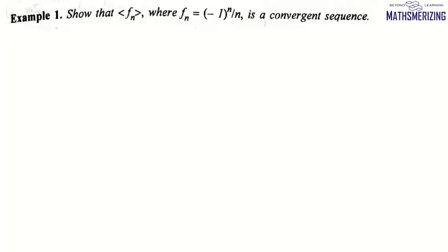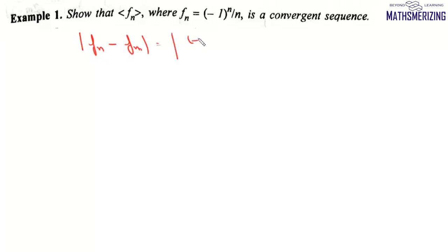Let us take up an example. We need to show that the sequence fn defined as (-1)^n / n is a Cauchy sequence. We consider |fn minus fm|, which equals |(-1)^n / n minus (-1)^m / m|.